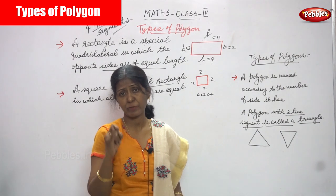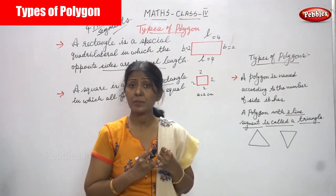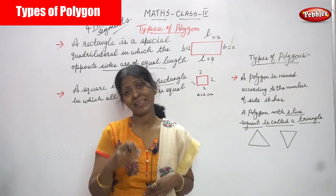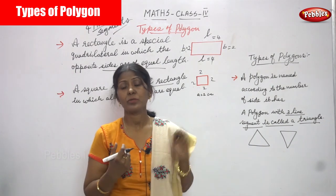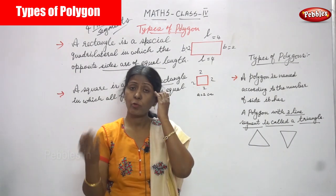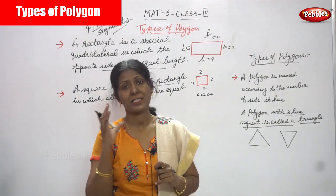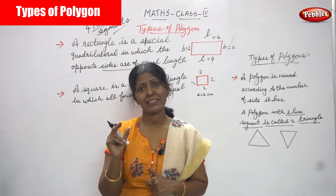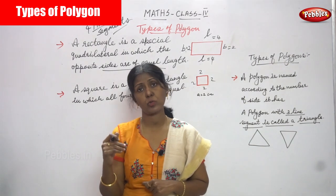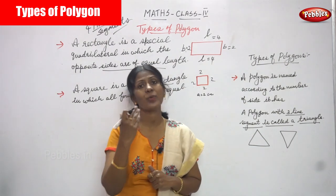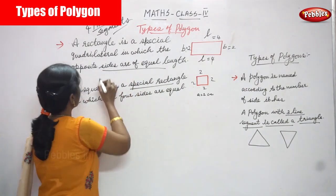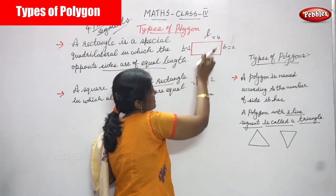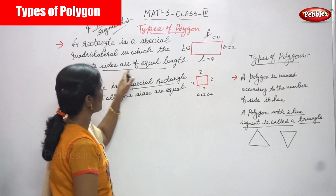So to summarize: three line segments give a triangle, and four line segments give a rectangle or a square. Rectangle is a special quadrilateral and square is a special rectangle. Both rectangle and square have four sides, but in a square all four sides are equal, while in a rectangle the opposite sides are equal — two lengths and two breadths. The opposite sides of length are equal and the opposite sides of breadth are equal.